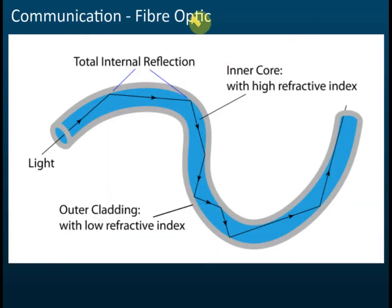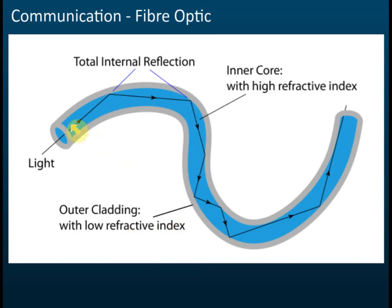For communications, we use fiber optics. Now, what you need to know about fiber optics: there are two layers — we have the inner core, which is glass, and the outer cladding. The inner core should have a high refractive index and the outer cladding should have a low refractive index.